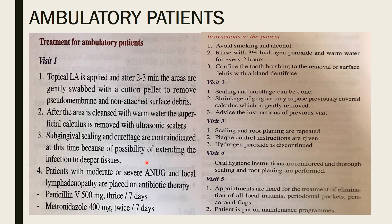Patients with moderate or severe ANUG and local lymphadenopathy are placed on antibiotic therapy: Penicillin V 500 mg thrice daily for seven days, or Metronidazole 400 mg twice daily for seven days. Patient instructions include avoiding smoking and alcohol, and rinsing with three percent hydrogen peroxide and warm water every two hours.